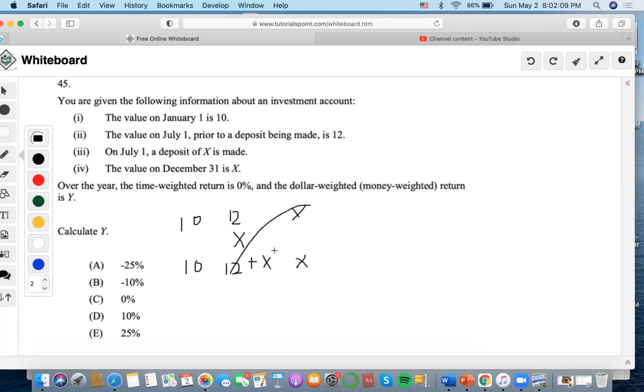We could combine these to make a ratio: 12 over 10 times X over 12 plus X equals 1 plus I. But the time-weighted return is 0, so this whole thing just equals 1.